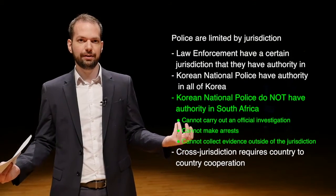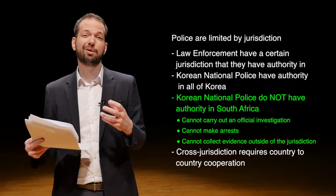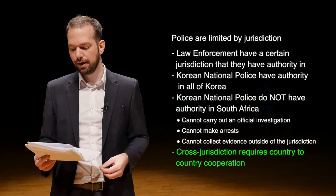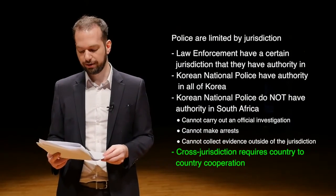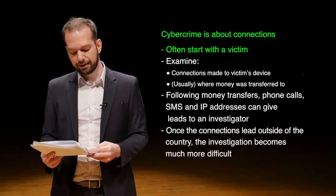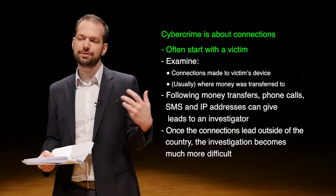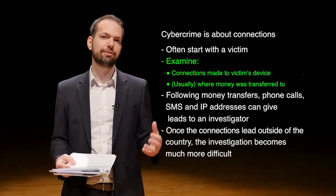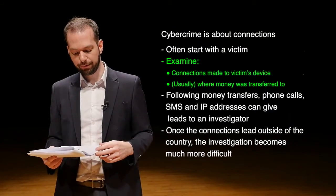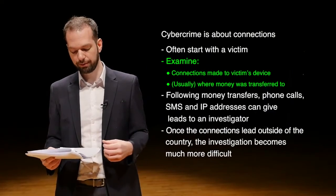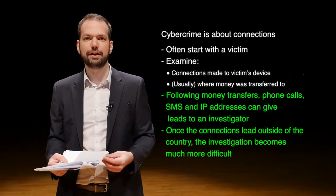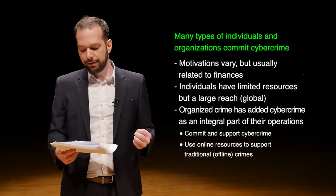If you have a suspect in South Africa and a victim in Korea, the two governments have to work together — and they might not want to, or the amount of money might not be enough to justify cooperation. Cross-jurisdiction investigation requires country-to-country cooperation. When investigating cybercrime, we often start with the victim — someone saying their information or identity was stolen. We then examine all the different connections we can find: look at the victim's device, where money was transferred, phone calls, SMS — follow them all back to try to identify the suspect.